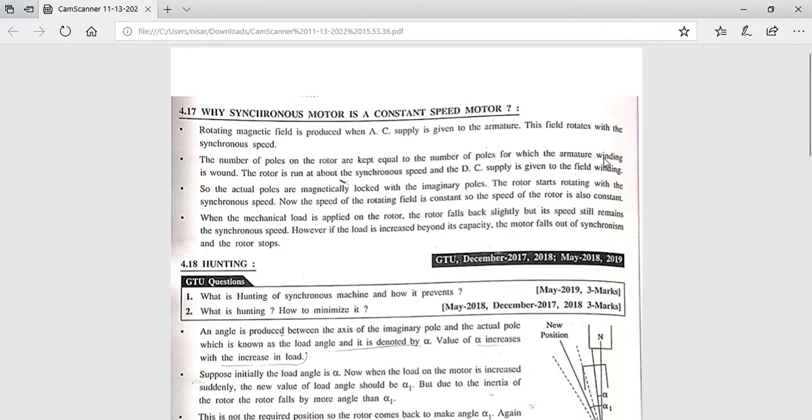The poles on the rotor are equal to the imaginary poles created in the armature winding. If there are four poles on the rotor, then four imaginary poles will be on the armature winding.